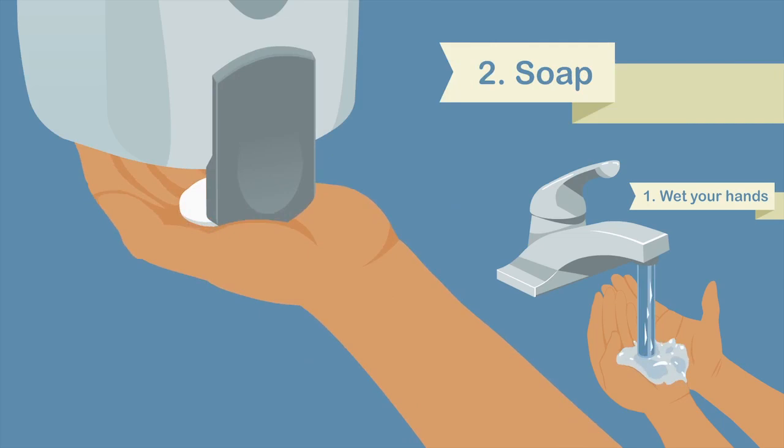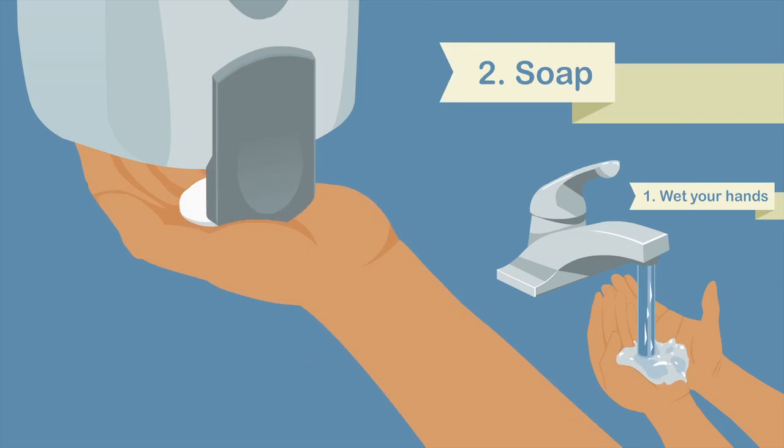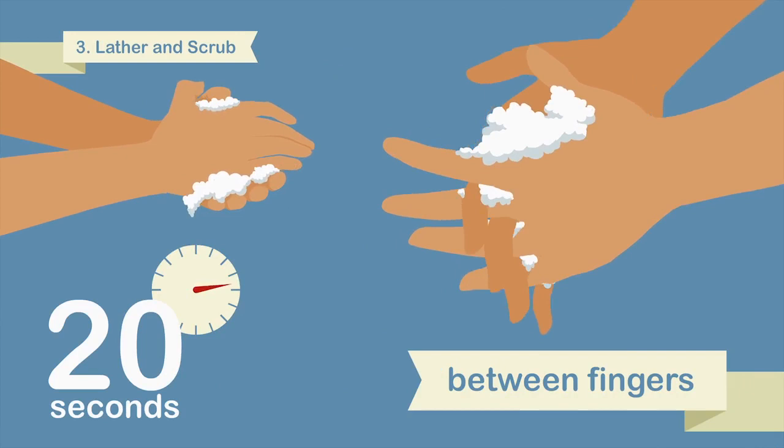There is a proper way to wash your hands. The CDC recommends wetting and lathering with soap and water, followed by scrubbing hands for 20 seconds, including between fingers and under nails.